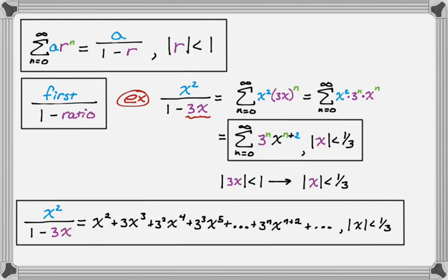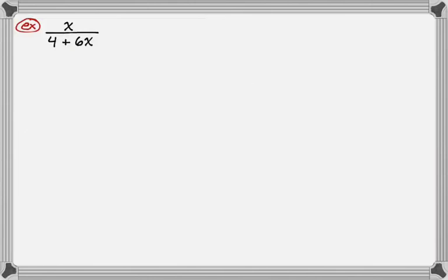Let's take a look at another one. We have x over 4 plus 6x. This isn't exactly what I want. What I really want is I want this to be a 1. I don't want it to be a 4. So what I'm going to do is divide everything I see by 4. That will give me the quantity x over 4 over, and then this is 4 over 4 is 1 plus 6 over 4 is 3 halves. So 3x over 2.